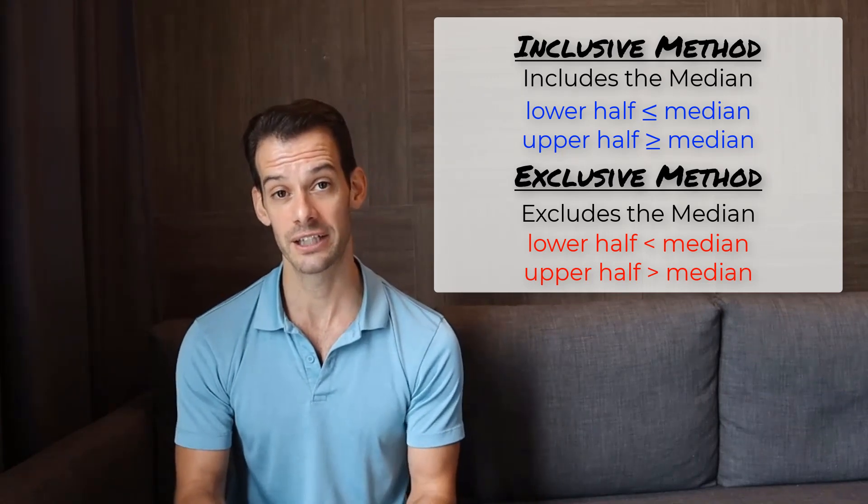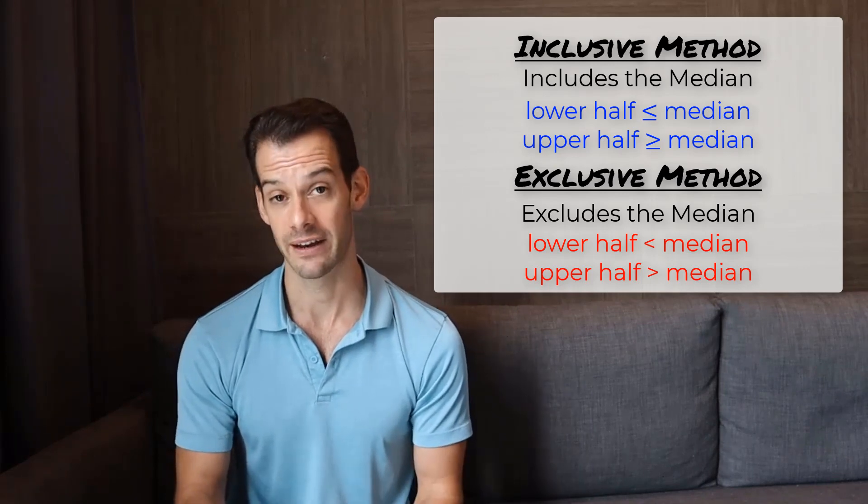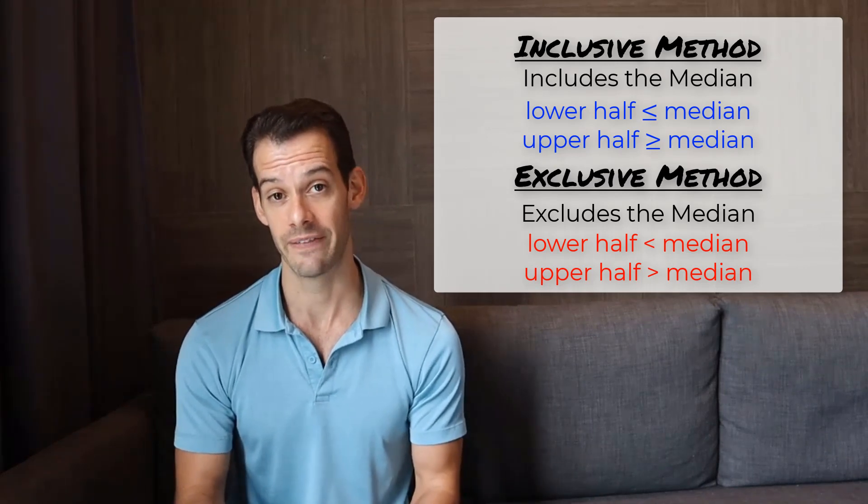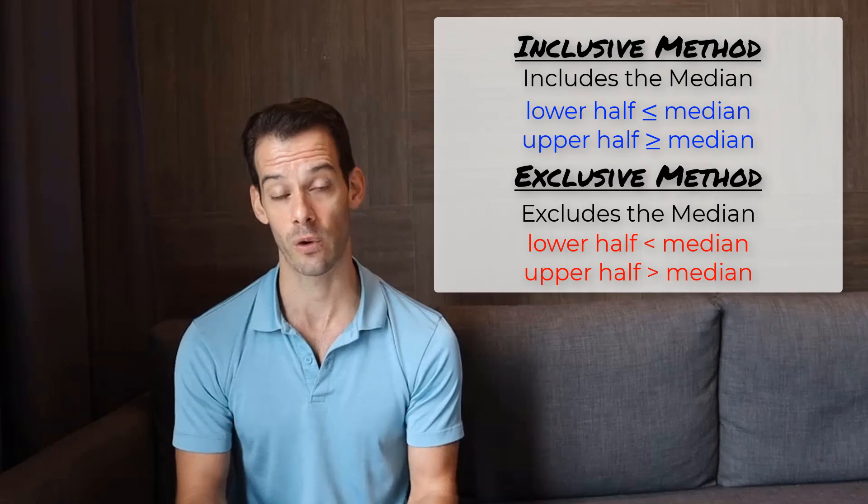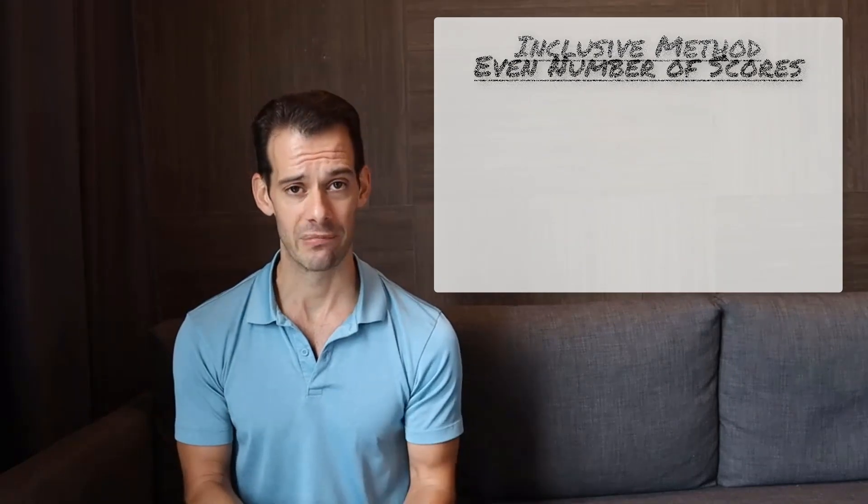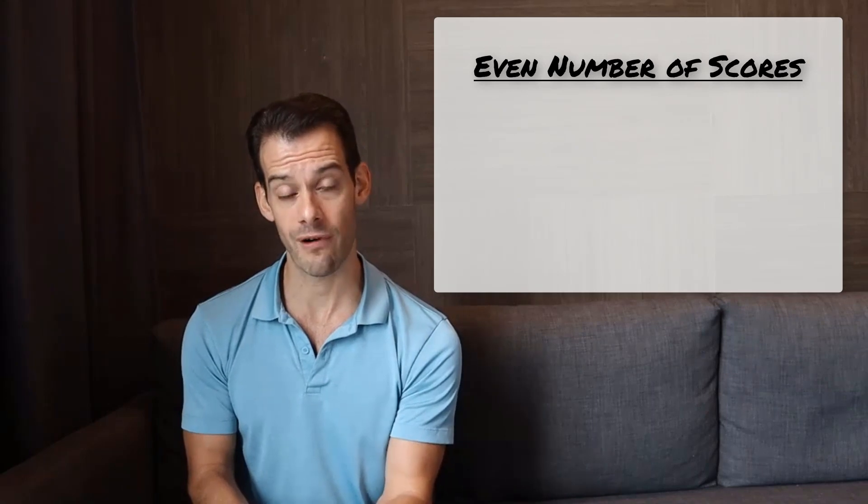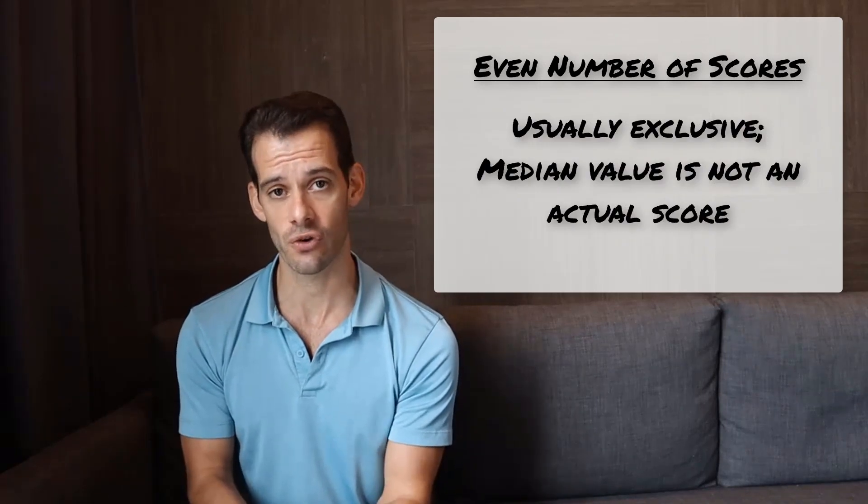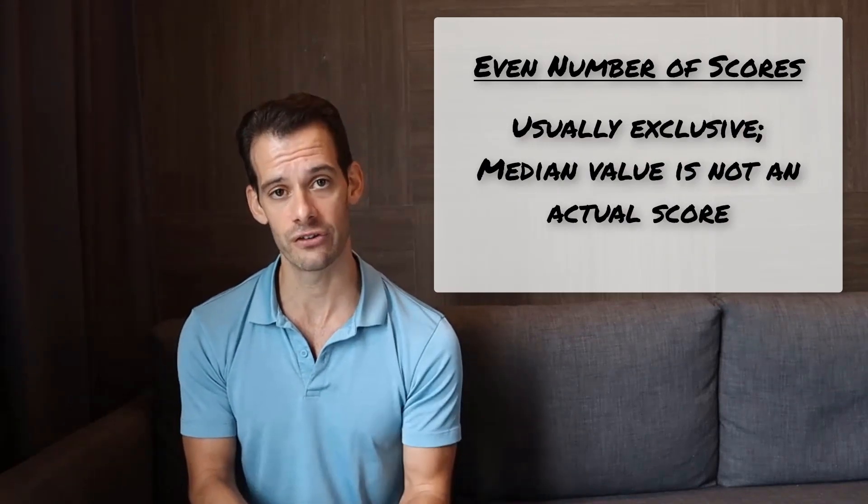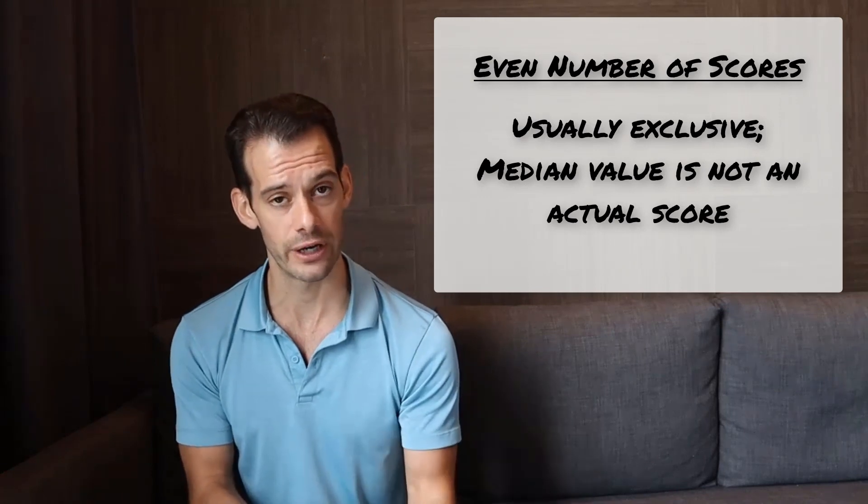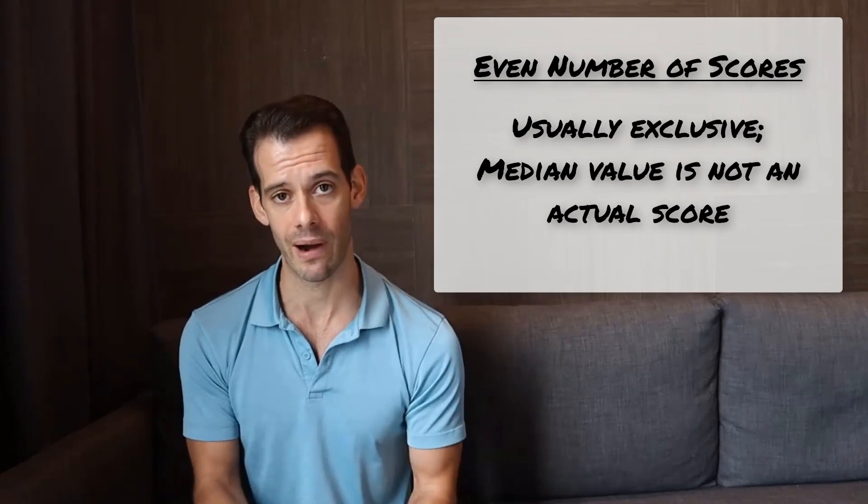This will slightly change the boundaries of where our 25th and 75th percentiles lie, and this means that it will slightly change the interquartile range. If we have an even number of scores, then we naturally tend to exclude the median because it falls between two of our values. It's the mean of the two middle scores. It's not actually one of the values of our data. So it makes sense to exclude it from being part of the upper and lower halves of our data.